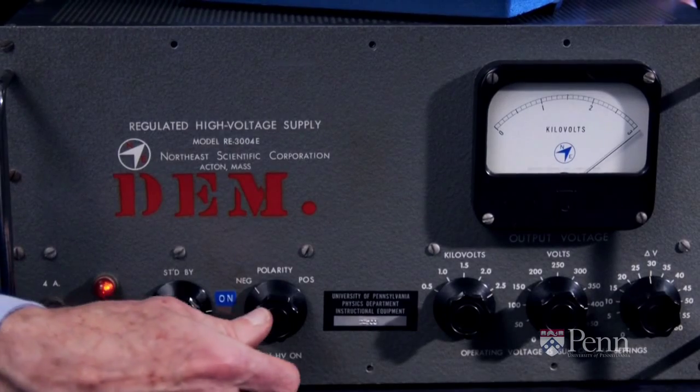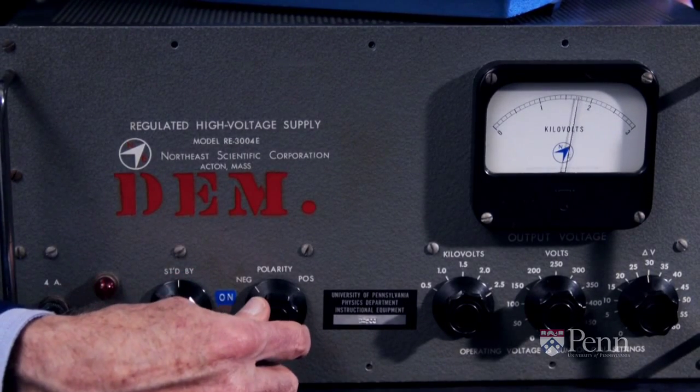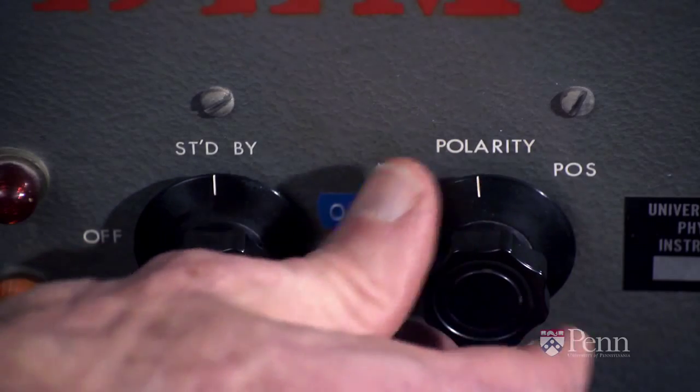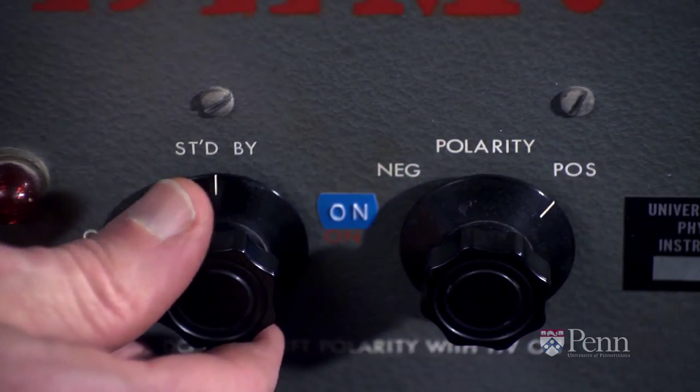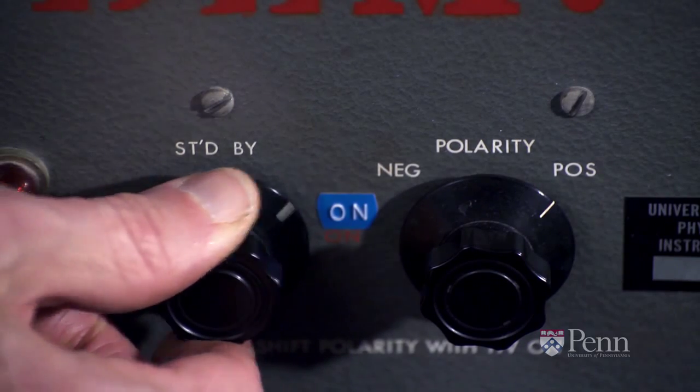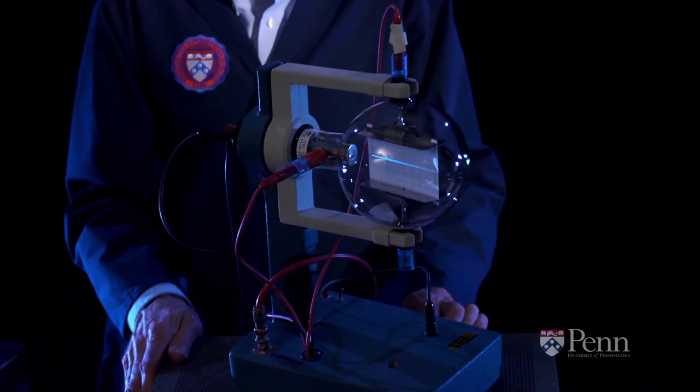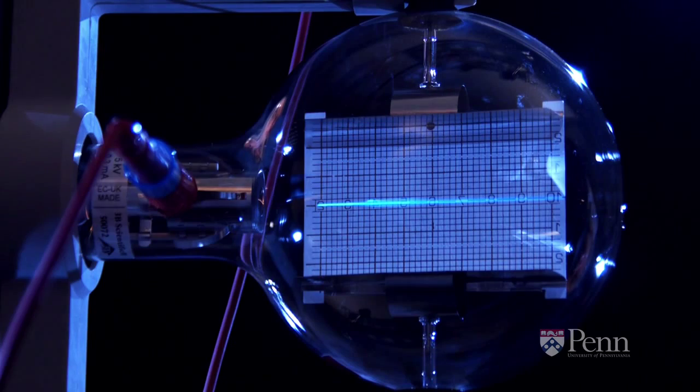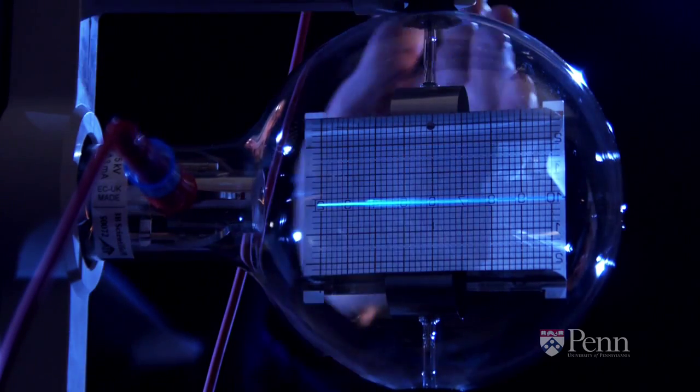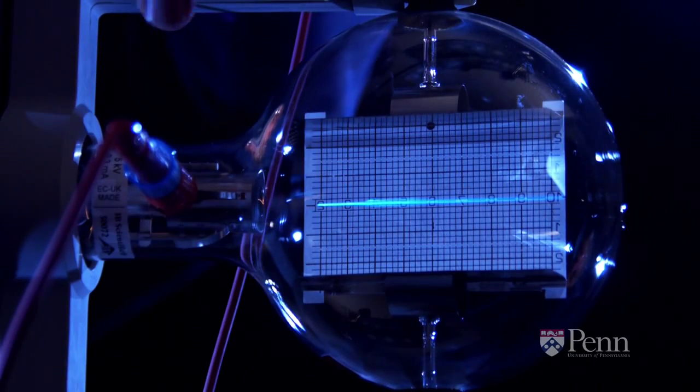And so now we'll go back to the normal function of the cathode ray tube by setting the power supply to positive, which is to say that the starting point of the tube is negative and the attracting end is positive. When we turn that on, we see that the electrons are hitting the card. They're traveling in a nice straight line, not surprising because electrons follow Newton's first law. If there are no forces on the electrons, they move in a straight line.